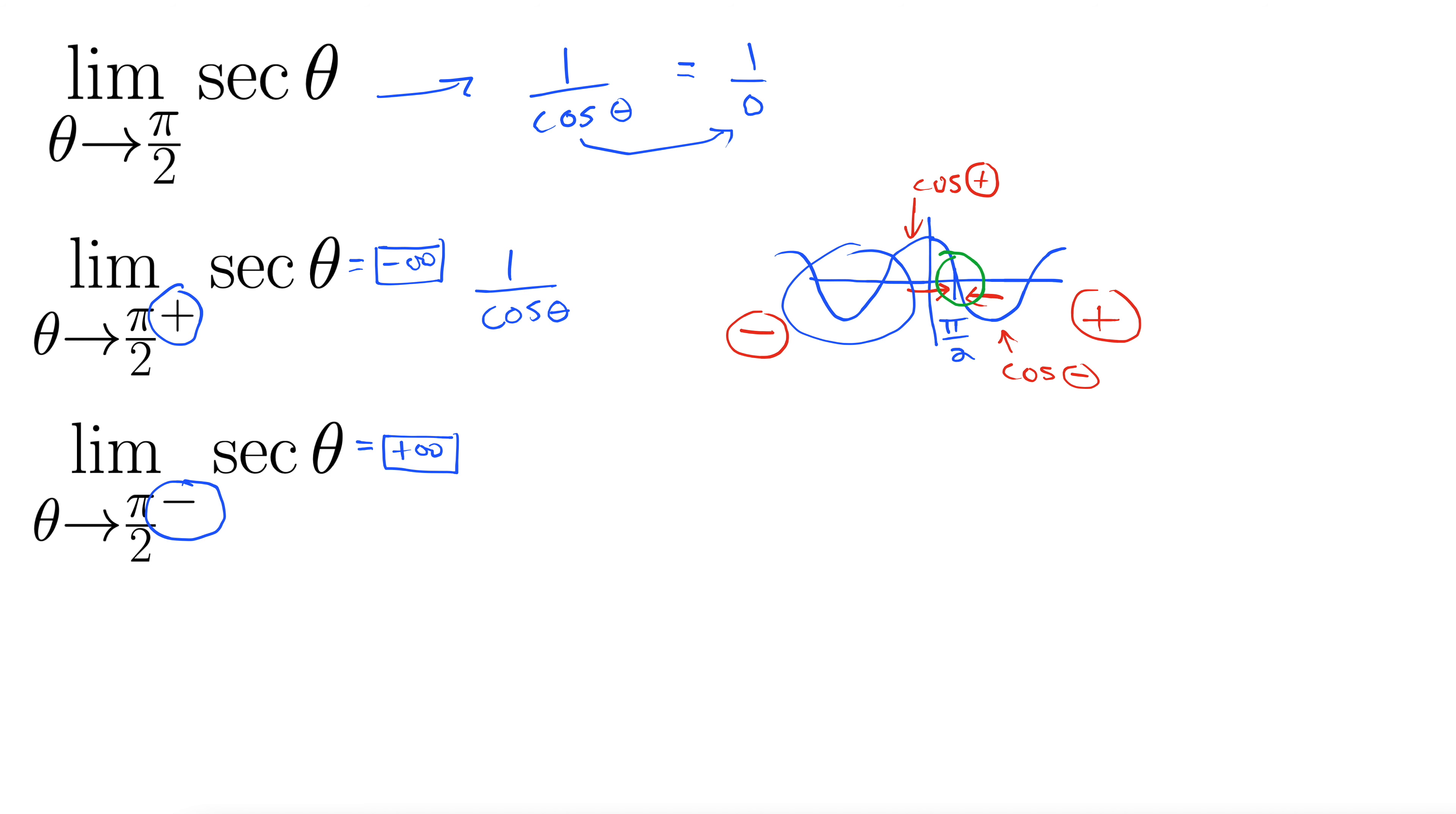We have two different infinities here, negative and positive. Remember that the limit at a point a exists if and only if the one-sided limits, as you approach a from the positive direction and a from the negative direction, are equal. Well, here they're not equal, thus we can conclude that the limit as theta goes to π/2 does not exist.